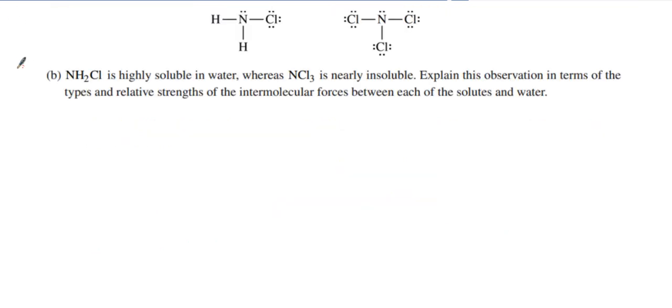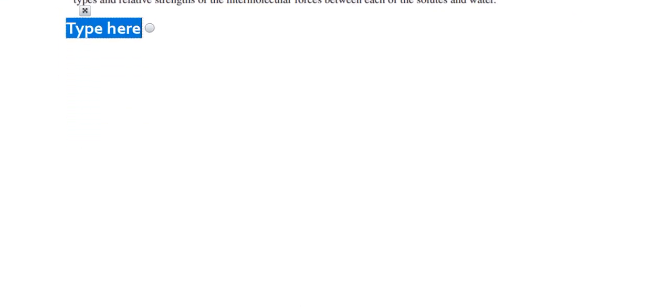Question number B is they say this molecule right here, NH2Cl, is highly soluble in water, and they're giving you a little clue to the answer right there, whereas NCl3 is nearly insoluble. And so we're going to explain this observation in terms of types and relative strengths of intermolecular forces between the solutes and the water. They've already given us the claim. The claim is that NH2Cl is highly soluble in water, whereas NCl3 is nearly insoluble.